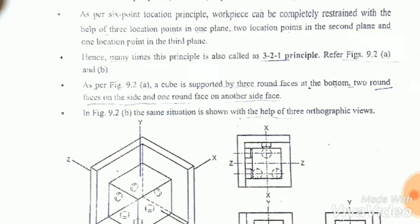If we have put a body in free space, then it is free to rotate and free to move in all three axes. That means it is free to rotate either X plus direction or X minus direction, clockwise or anticlockwise in all three axes.